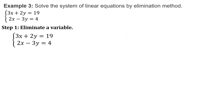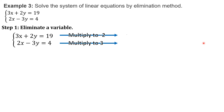In this third example, no coefficient is the same. So, decide what variable to cancel, then multiply the equations to make them the same. I want to eliminate variable x, so 3x and 2x must have the same coefficient. To do that, I have to multiply negative 2 to the first equation and positive 3 to the second equation, so that both coefficients of x will become 6. So: 3 times negative 2 gives negative 6x, 2 times negative 2 is negative 4y, and 19 times negative 2 is negative 38. For the second equation, multiply each term by 3.